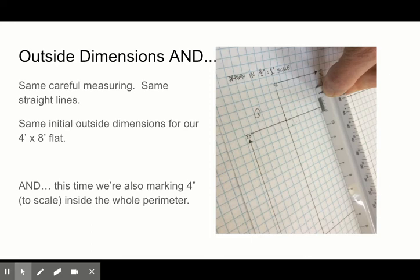So outside dimensions, same. We're also going to mark four inches to scale inside the whole perimeter. So remember our window was four inches from the inside of the top. This time we're going all the way around.